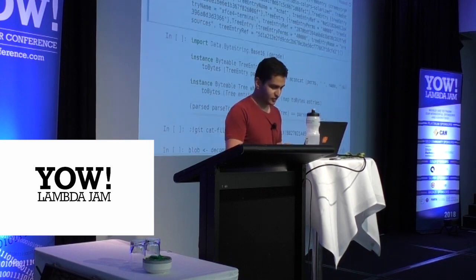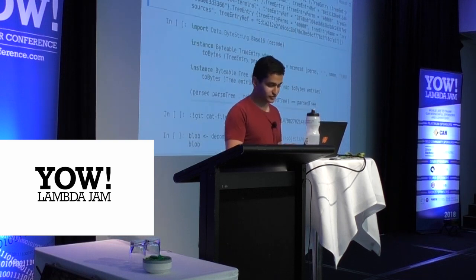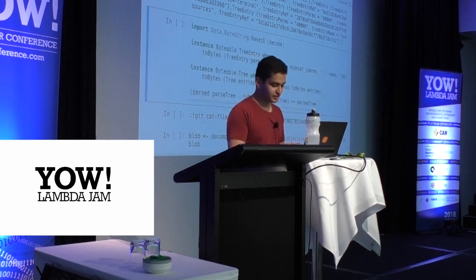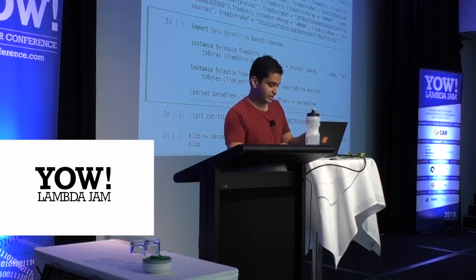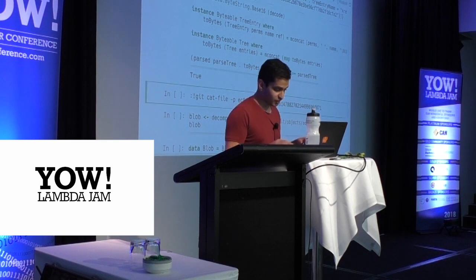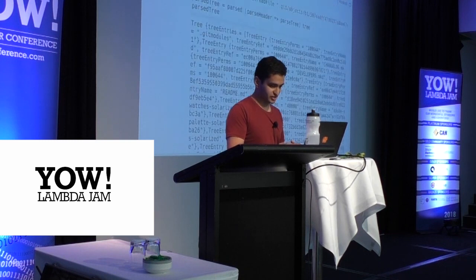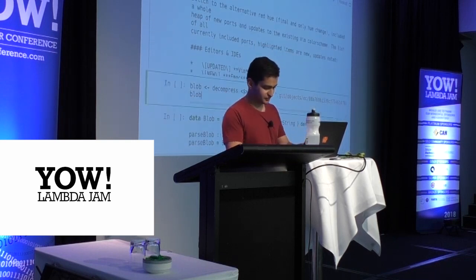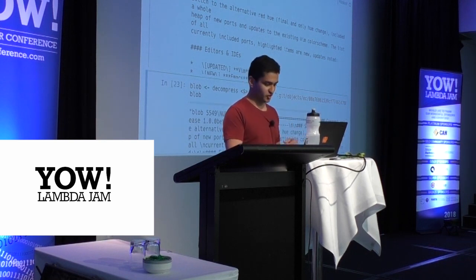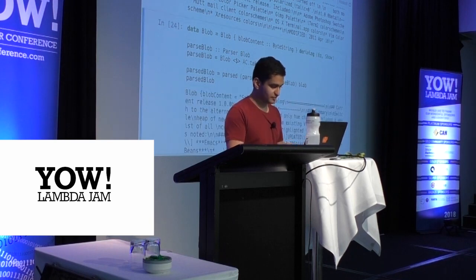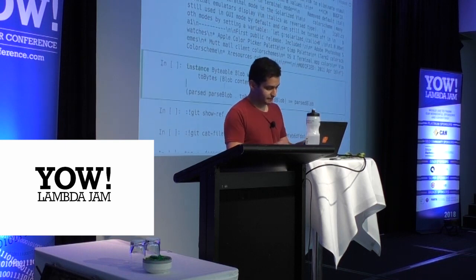Now I've done a commit and a tree, and I want to do a blob. A blob is what git calls a file — it's just some content. I chose to do the changelog. A blob is literally just a header plus some content: a header with a length, a null byte, and then the content. Parsing this is very straightforward — I just parse a header and parse some content. Serializing it is also trivial.